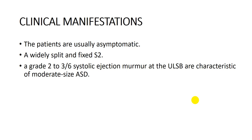Regarding clinical manifestation, patients with ASD are usually asymptomatic. They can present with symptoms such as decreased exercise tolerance, easy fatigability, and recurrent chest infection. Rarely they can present with heart failure, but most patients are usually asymptomatic. They may become symptomatic later — in the third or fourth decades of life — presenting with right-sided heart failure or arrhythmia.